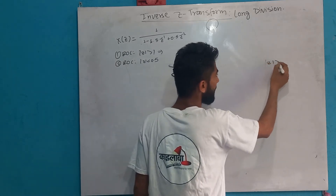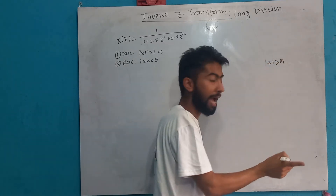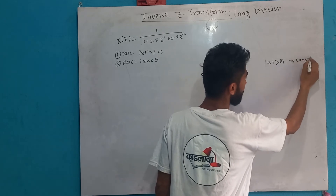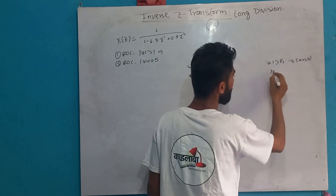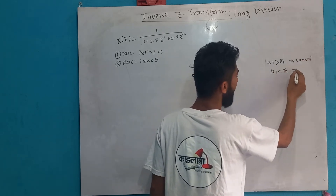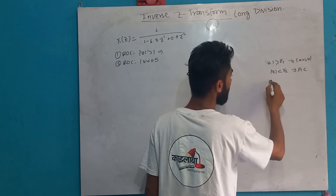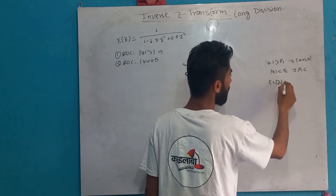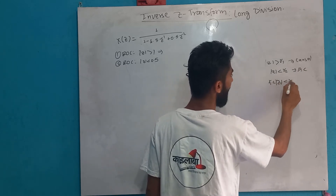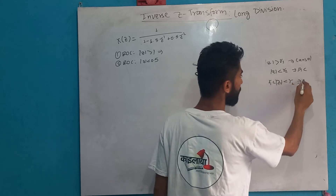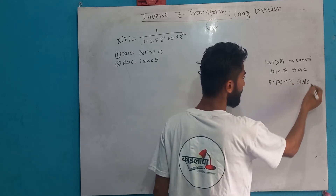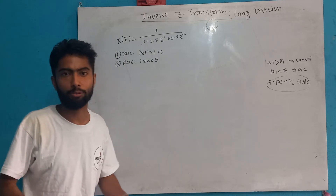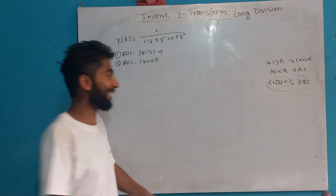When Z is greater than R1, this is the causal signal. When Z is less than R2, this is the anti-causal signal. When R1 is inside and R2 is outside, this is the non-causal signal.